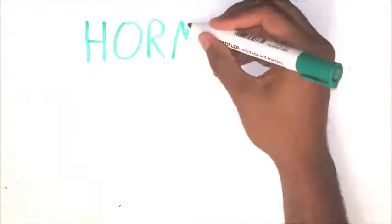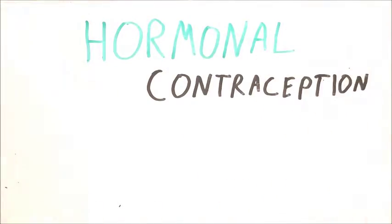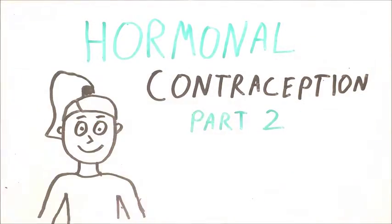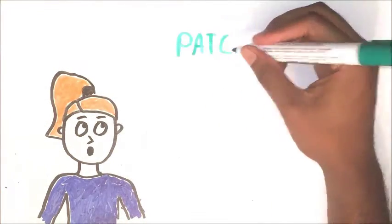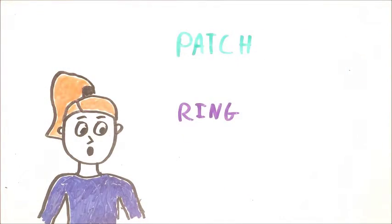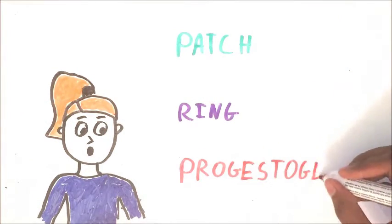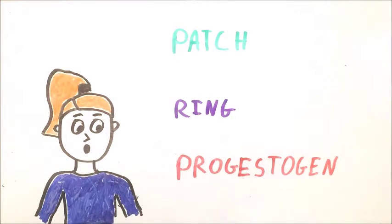In this video I will continue to talk about the different types of hormonal contraceptives available for women. In the last video I spoke about the oral contraceptive pill, and in addition to that there is the combined transdermal patch, the combined vaginal ring, and progestogen-only contraceptives. The first two in this list are combined hormonal contraceptives and the last one simply uses progestogen.